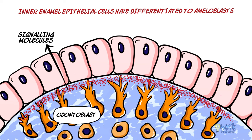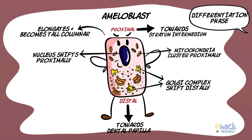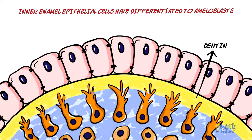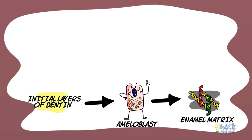Odontoblasts begin to form dentine at the end of the differentiation phase. In summary, the inner enamel epithelial cell at the end of the pre-secretory stage differentiates to become an ameloblast, with the nucleus polarized away from the dental papilla and most organelles located distally. Ameloblasts are attached to each other with junctional complexes, both proximally and distally. Once the pre-dentine or first layer of dentine is formed, it stimulates the ameloblasts to begin enamel formation — just as the inner enamel epithelium was necessary for differentiation of dental papilla cells to odontoblasts.